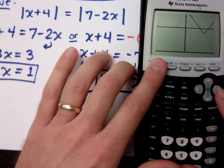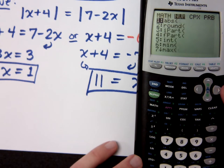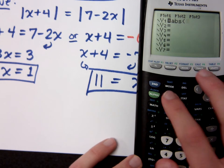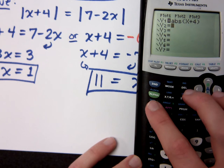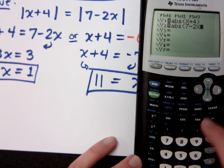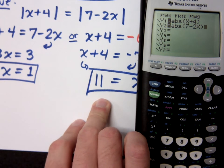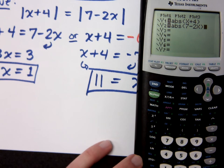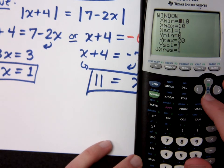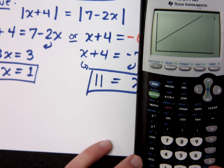So, I have the absolute value of x plus 4. And this other guy, I have the absolute value of 7 minus 2x. Now, notice that my solutions are 1 and 11, right? That means my window is not going to be right. So, change your window to be from 0 to 20. I think that's going to be a good window for us.